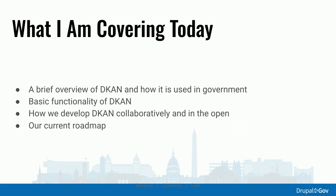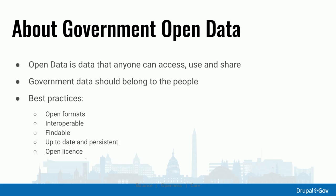You can think of open data as a sister policy to things like FOIA, but it's more than that. It can foster innovation and improve government functioning internally, because it greases the wheels of data sharing between agencies. The best practices in open data revolve around open formats — sharing data in formats you don't need proprietary software to work with — interoperability, findability, persistence of links, and licensing that allows for all kinds of use and reuse.